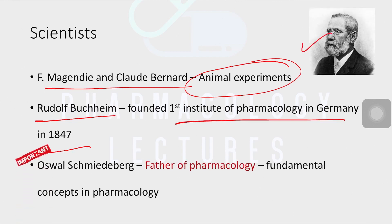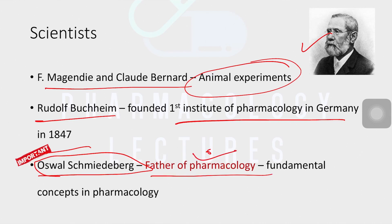Another key name is Oswald Schmiedeberg - they can ask you this in MCQs as well. He is the father of pharmacology, so questions like 'who is the father of pharmacology?' can be asked, and the answer is Oswald Schmiedeberg. He developed a lot of fundamental concepts in pharmacology.